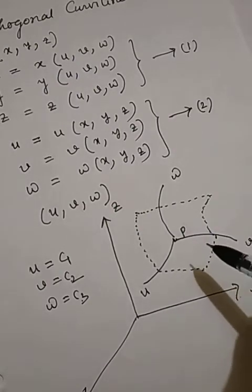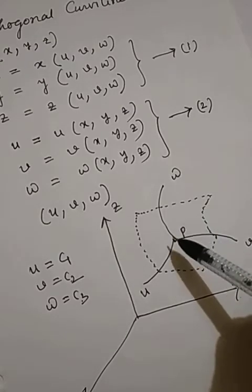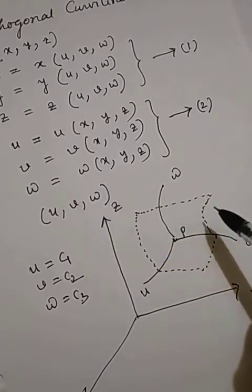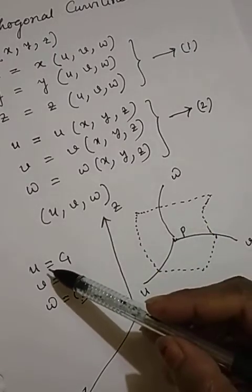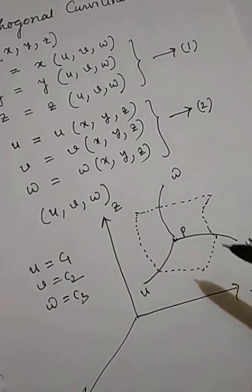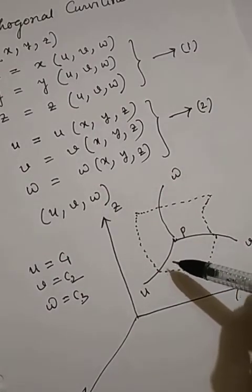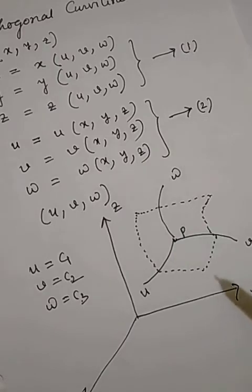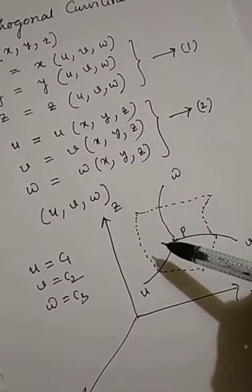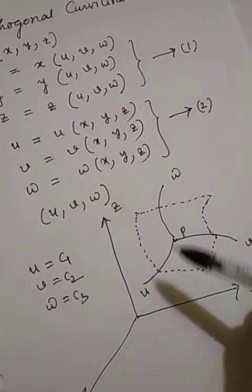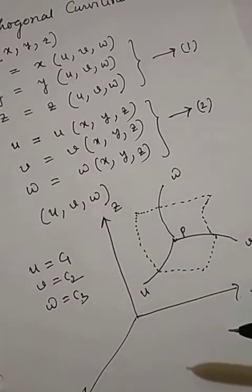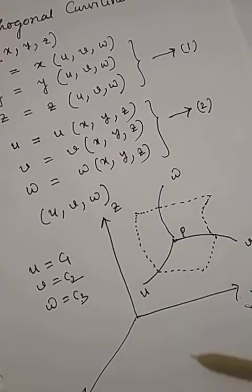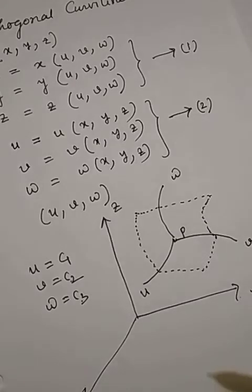The coordinate surfaces u equals to c1 and v equals to c2 touch or intersect at the coordinate curve or line. If each of these coordinate surfaces intersect perpendicularly, then the curvilinear coordinate is called orthogonal.